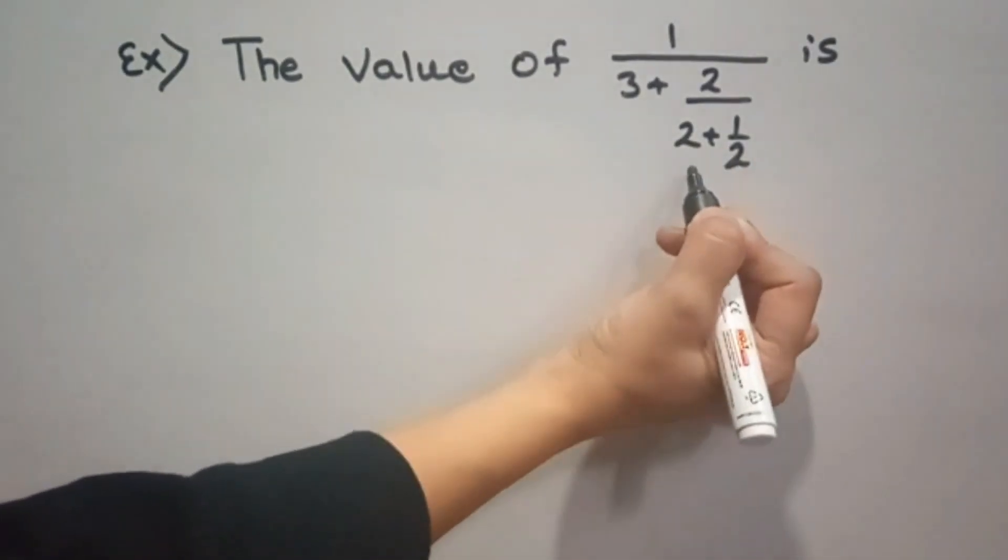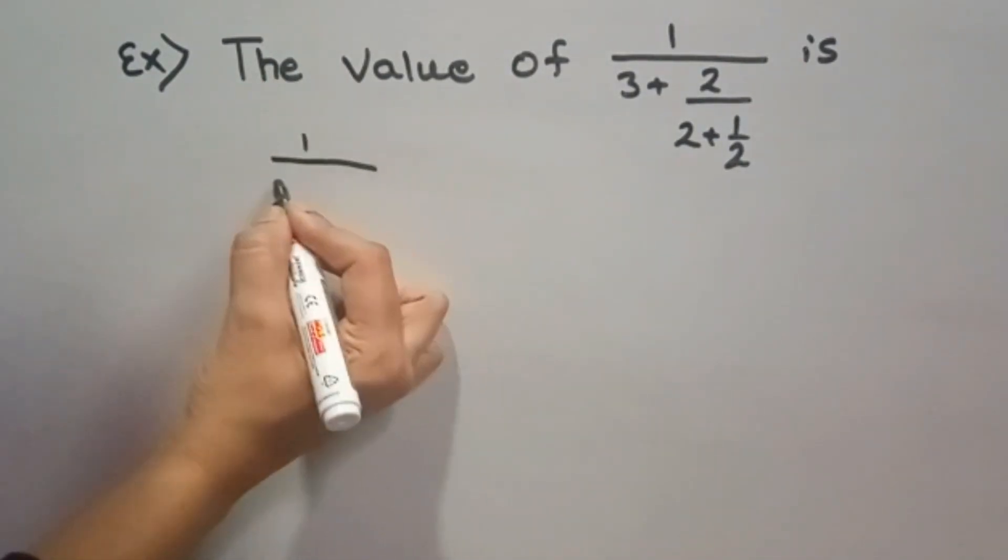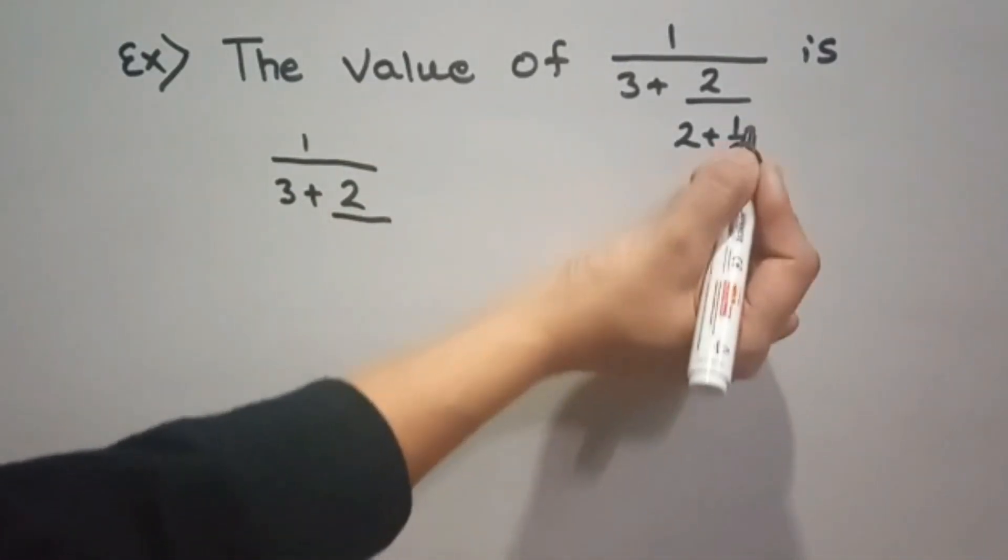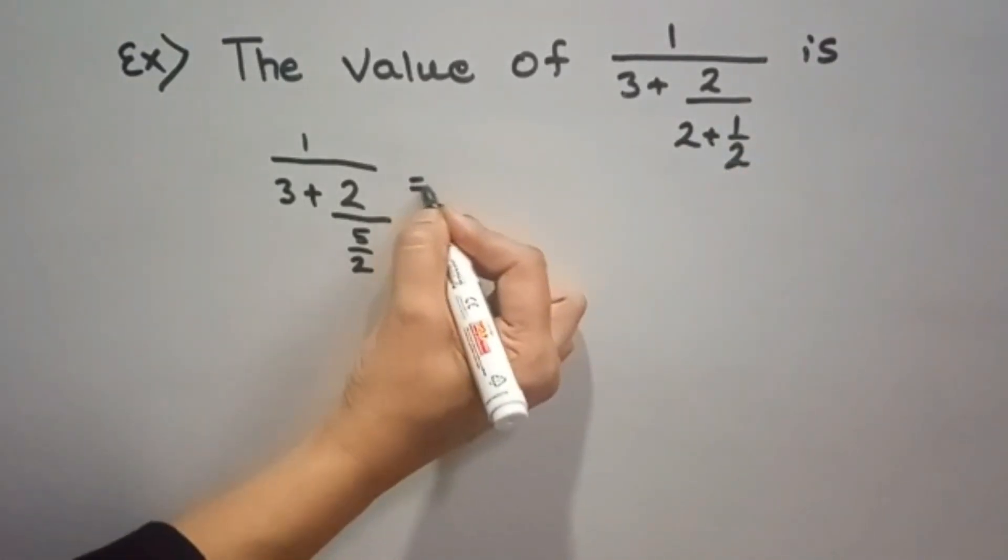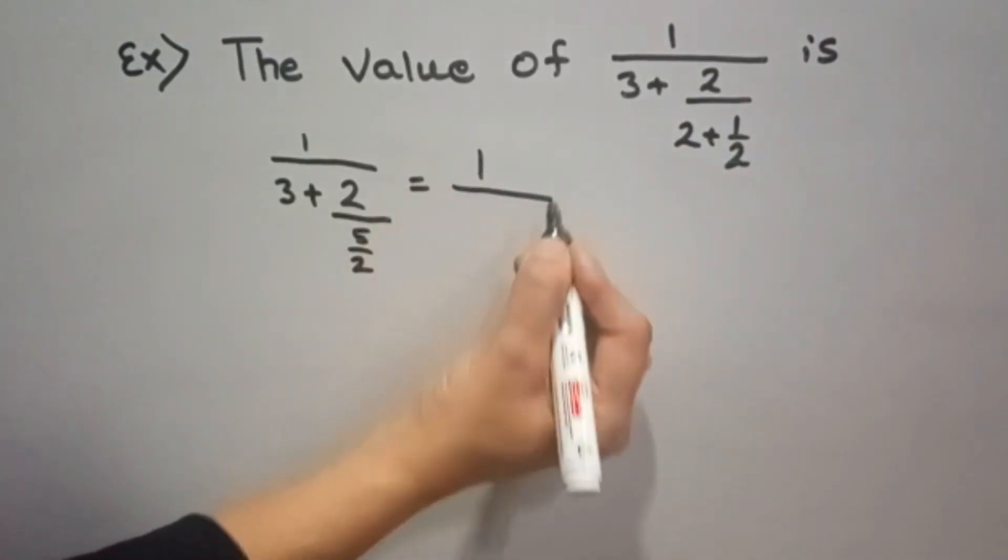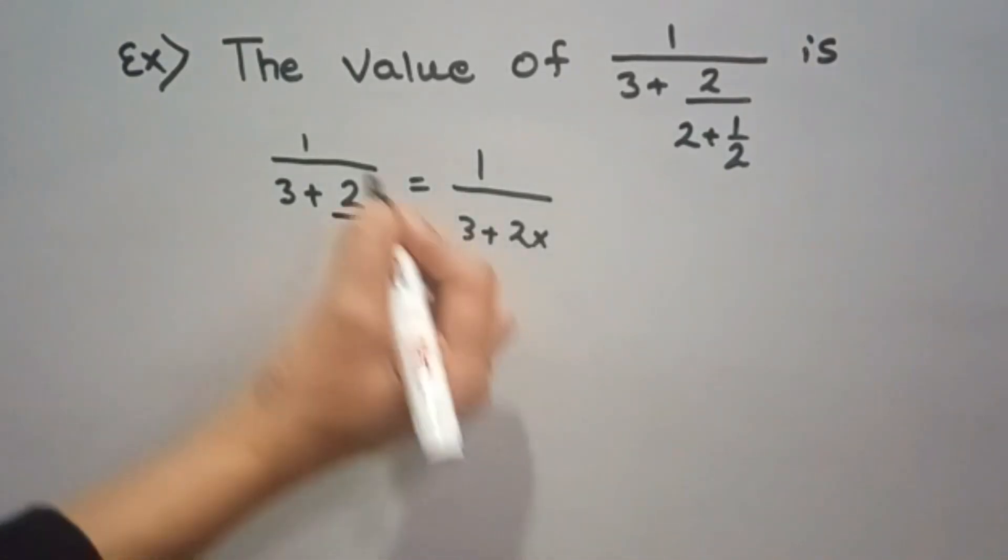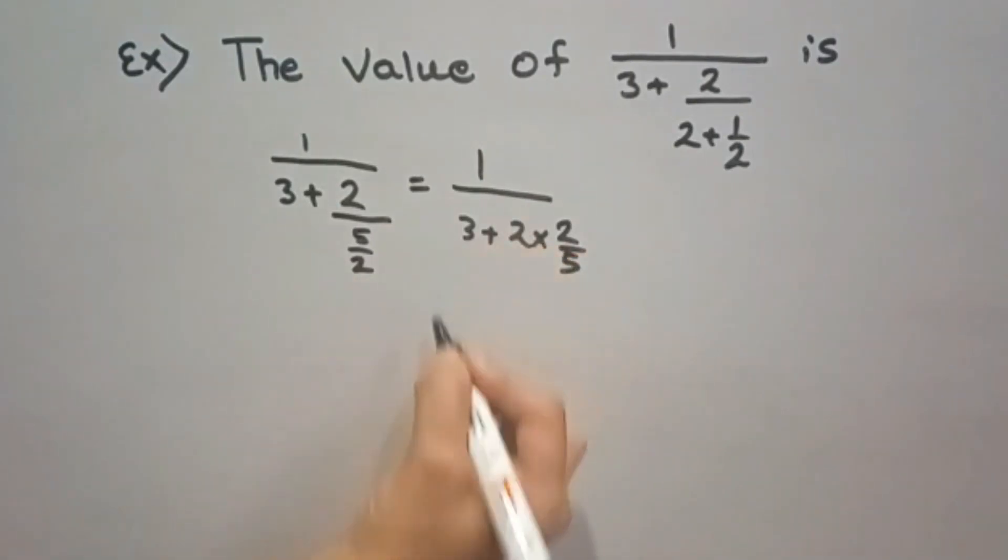We will solve the denominator first. 1 upon 3 plus 2 upon 2 to the 4, 4 plus 1, 5 by 2. I took LCM here. This is equal to 1 upon 3 plus 2 into the inverse of it, 2 by 5, 2 into 2 by 5.